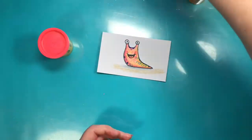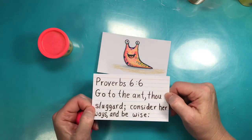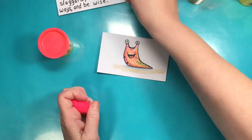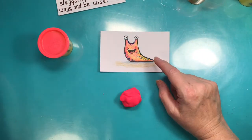So our verse for today is Proverbs 6:6: Go to the ant, thou sluggard, consider her ways and be wise. Go to the ant, thou sluggard, consider her ways and be wise, just like when we're drawing our slug.